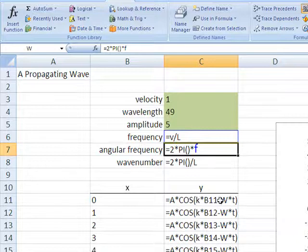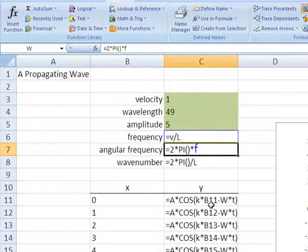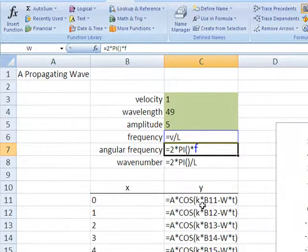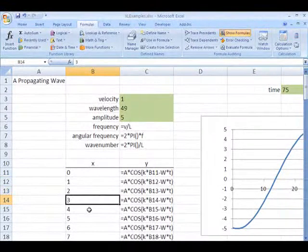So kx minus omega t is the thing in the parentheses, the argument of the cosine function, just as we saw on the handwritten equations. The only thing different here is B11, B12, B13, B14 - these are relative references to the values of x to the immediate left.